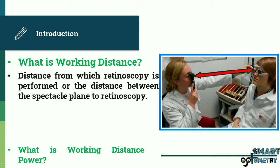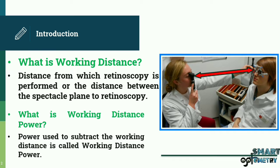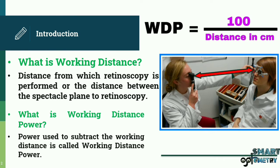Now, what is working distance power? The power used to subtract from the working distance is called working distance power. The formula used to identify working distance power is: 100 divided by distance in centimeters.